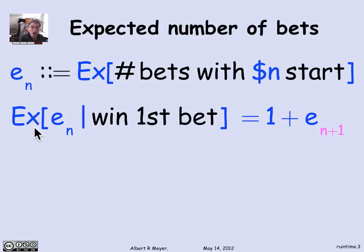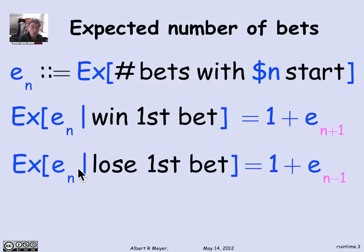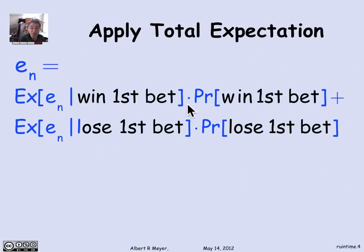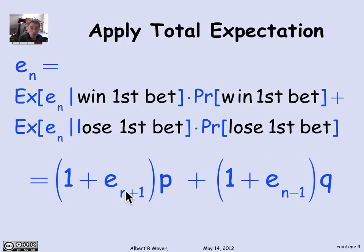The expected number of steps till termination, starting with N dollars, given that you win the first bet, is simply 1 — which is the first bet — plus the further expected number of steps starting with N+1. Likewise, given that you lose the first bet, it's 1 for the first bet plus the expected number of steps starting with N−1. By total expectation, E_N equals 1 plus E_{N+1} times p, plus 1 plus E_{N-1} times q.